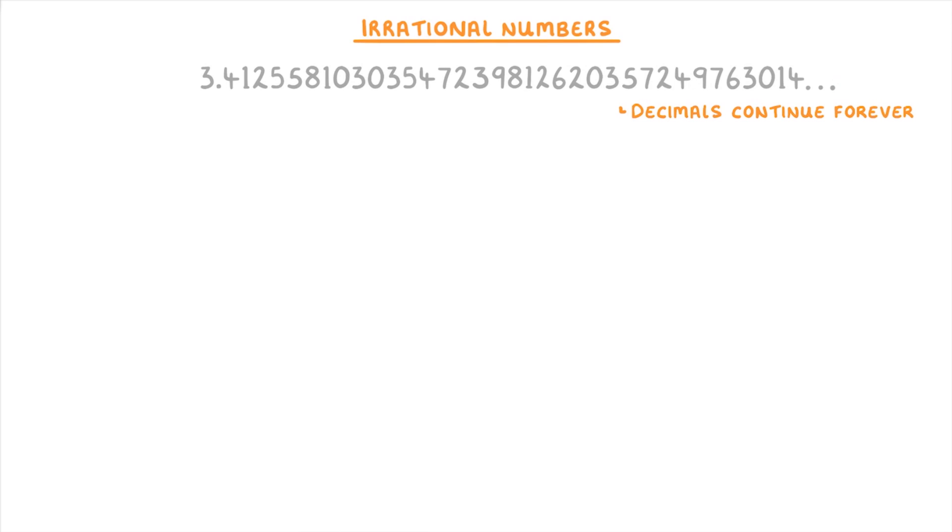Now, the last thing we need to cover are irrational numbers, which are much harder to write because their decimals continue forever but they don't repeat. So they look like a random string of numbers going on forever. The main place you'll see irrational numbers are surds, which we cover in detail in another video, but are basically square roots of non-square numbers, like the square root of 2, which would be something like 1.414213 but would continue on forever without any pattern.